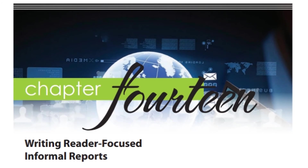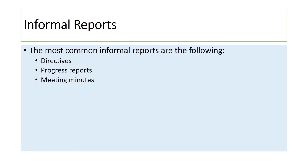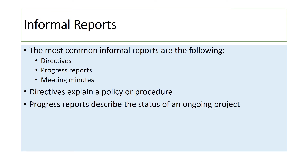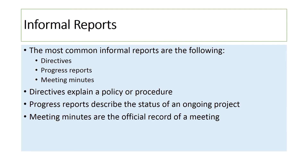Chapter 14, Writing Reader-Focused Informal Reports, discusses the different types of informal reports you may encounter in the work world. The most common informal reports are directives, progress reports, and meeting minutes. Directives explain a policy or procedure. Progress reports describe the status of an ongoing project. Meeting minutes are the official record of a meeting. Be sure to make a note of the required sections of each of these reports and look over the examples provided in the chapter.